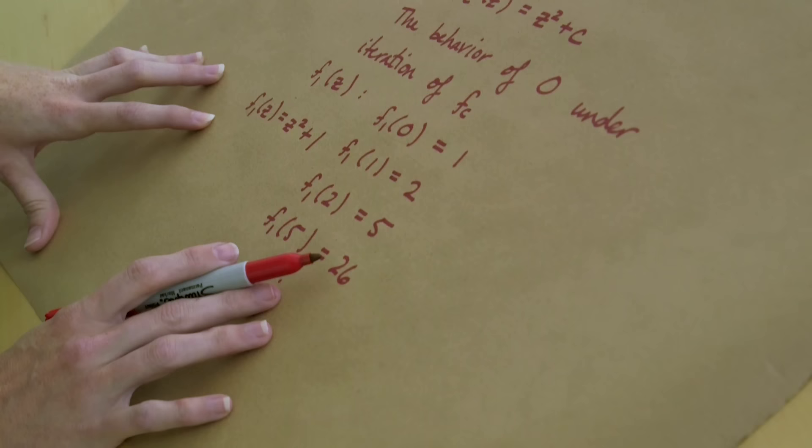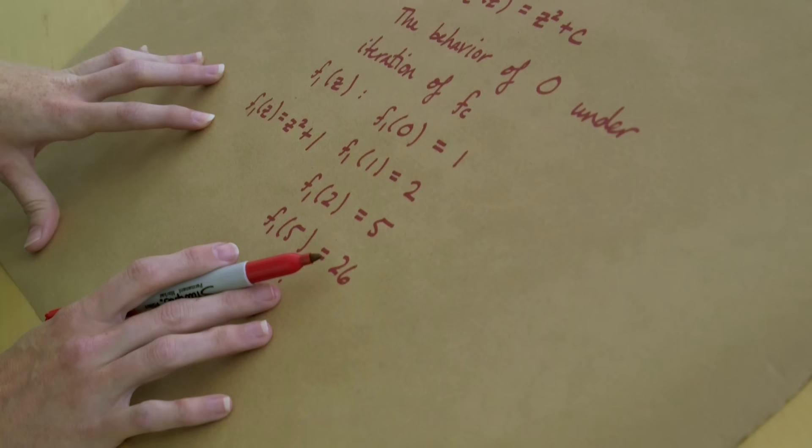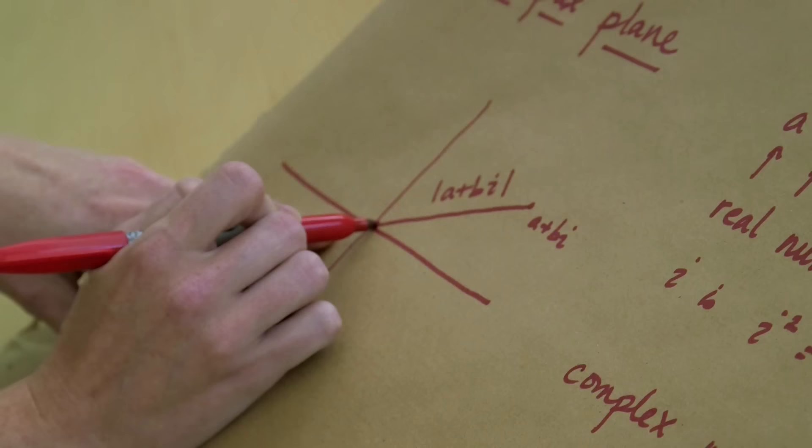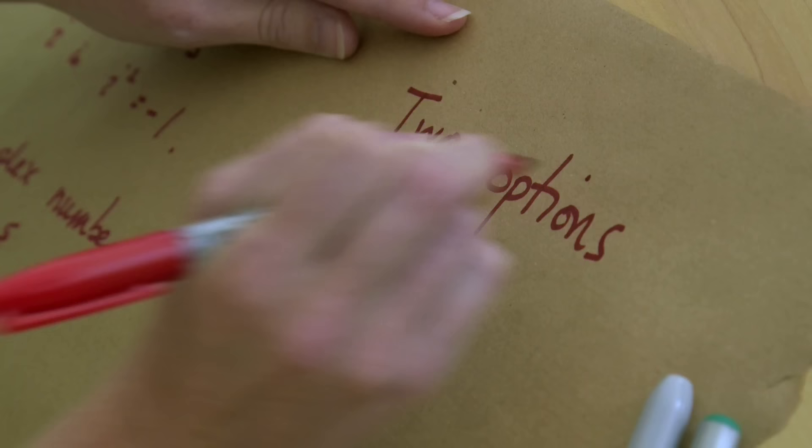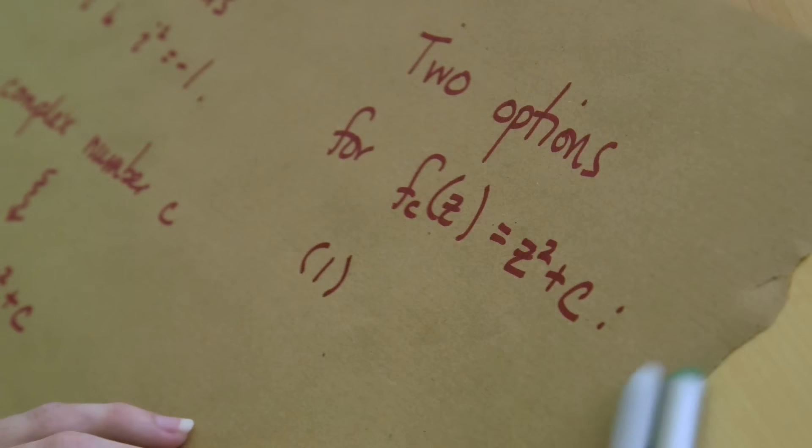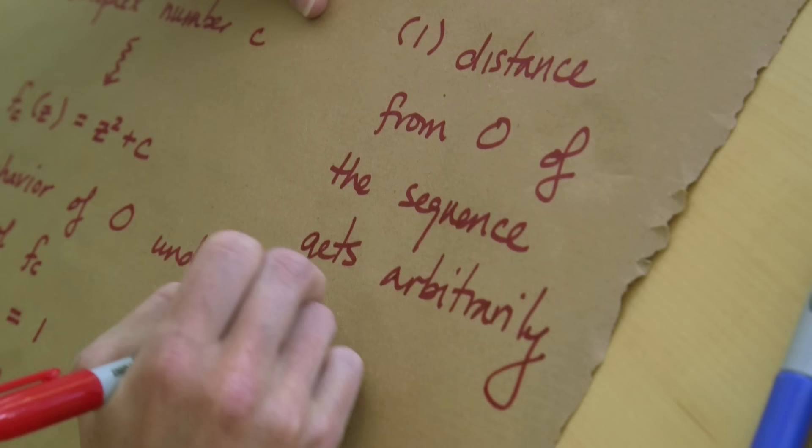Now what the Mandelbrot set is concerned with is what happens to the size of these numbers. By size I mean exactly what we were talking about before, the distance from the number in the complex plane to this point zero. It turns out there's two options for a function FC of z defined to be z squared plus C.